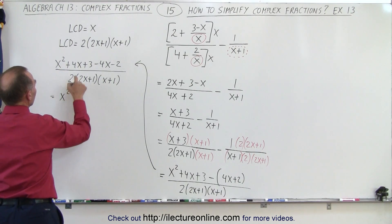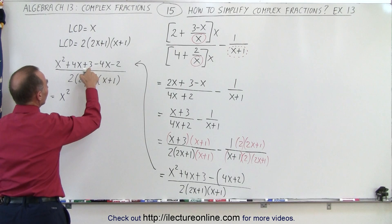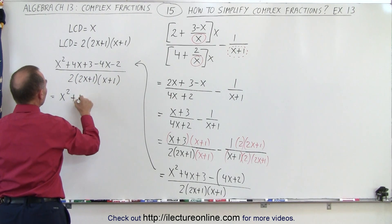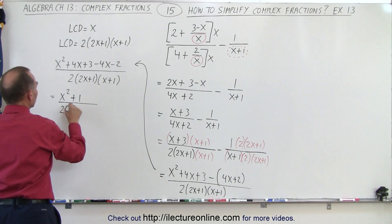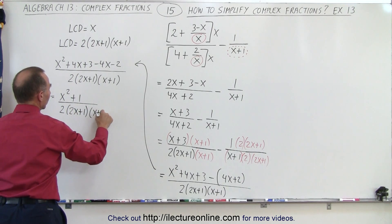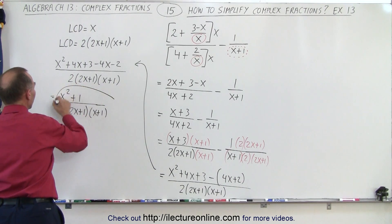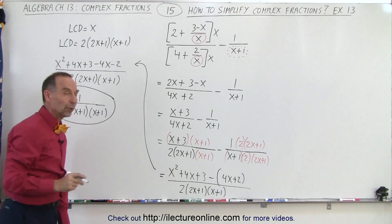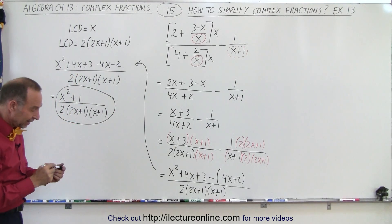We have an x squared, 4x minus 4x cancels, 3 minus 2 is plus 1, all divided by 2 times 2x plus 1 times x plus 1. And that's then the final form of our original equation. And that is how it's done.